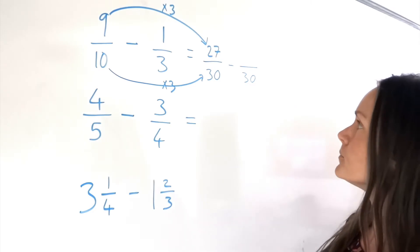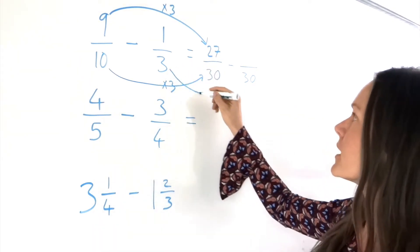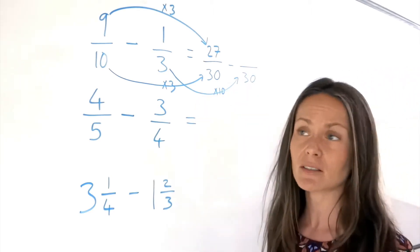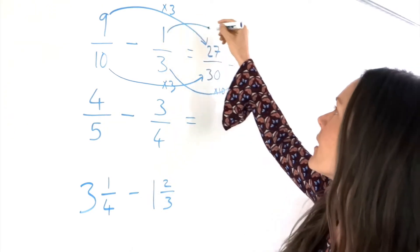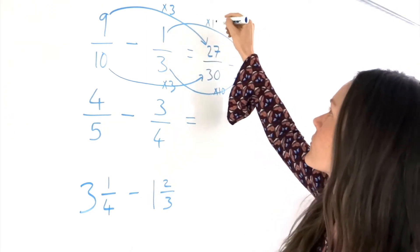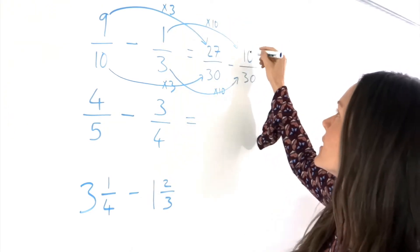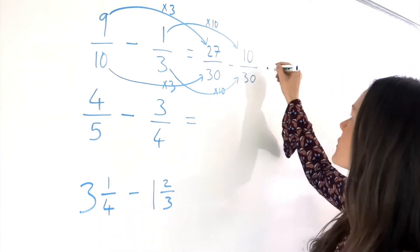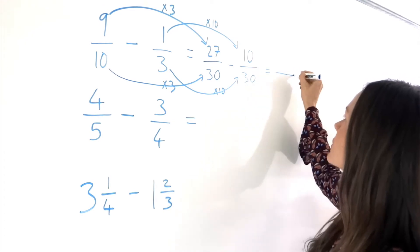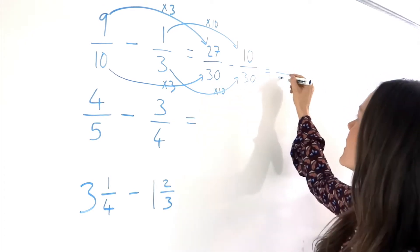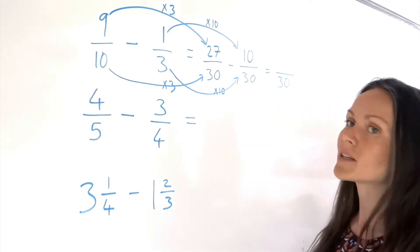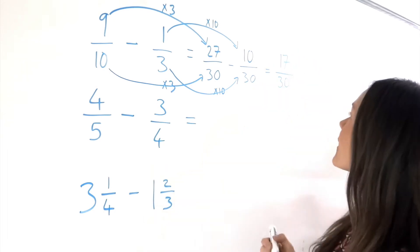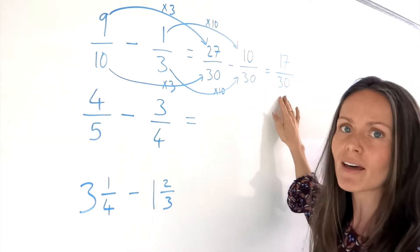For the second fraction, to get from 3 to 30, we must multiply by 10, so I do the same thing with the numerator — multiply that 1 by 10. So 1 times 10 is 10. Now that I've got the common denominators, I can do the subtraction. Just like with addition, the denominator stays the same; it's only the numerators that we're subtracting. So 27 minus 10 is 17. And that's finished because we can't simplify that fraction.